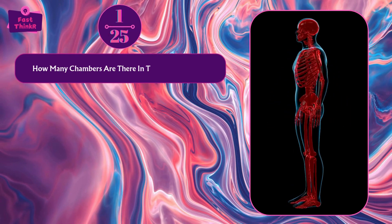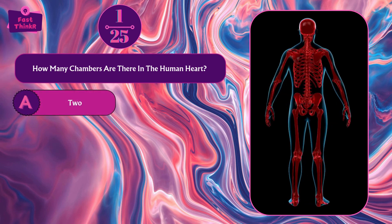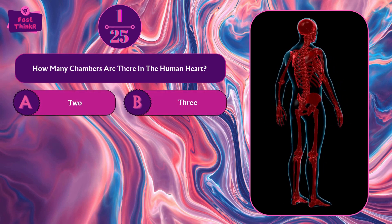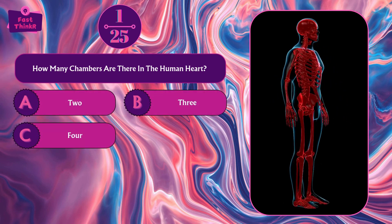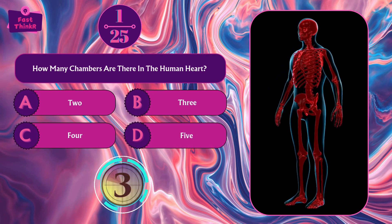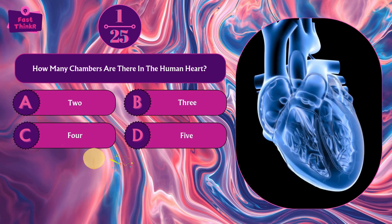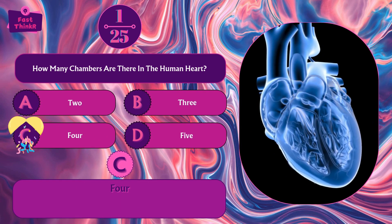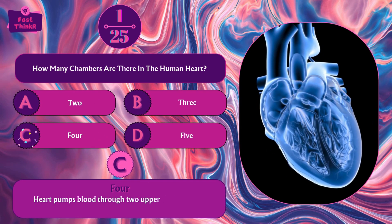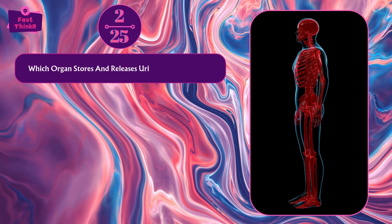How many chambers are there in the human heart? Two, three, four, or five? Option C — 4. The heart pumps blood through two upper atria and two lower ventricles, ensuring circulatory efficiency.